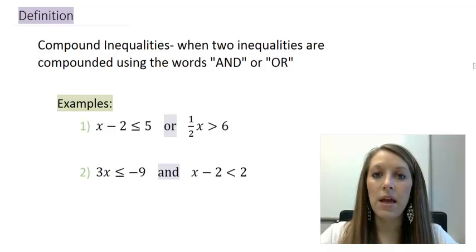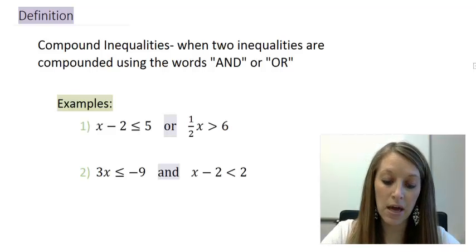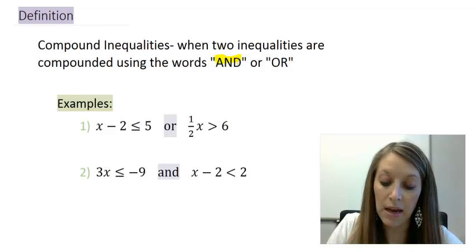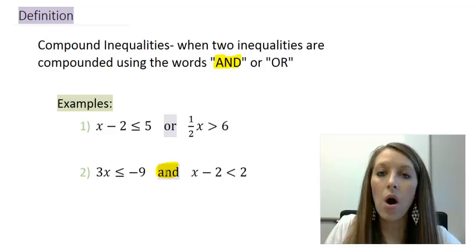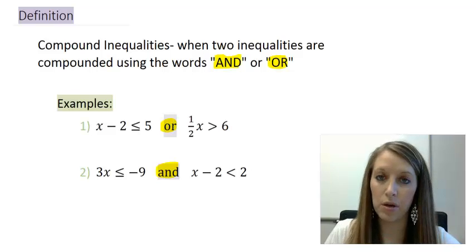Well, basically, a compound inequality is when we join or compound two inequalities together. And we can do it one of two ways. We can either compound it together by using the statement AND, like in my second example down here, or we can compound two of them together by using the statement OR, like my first example here.